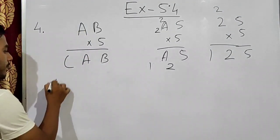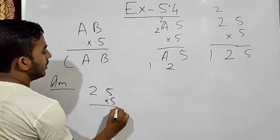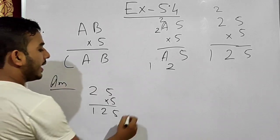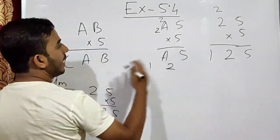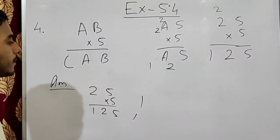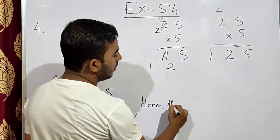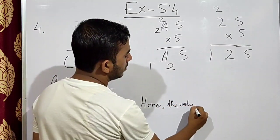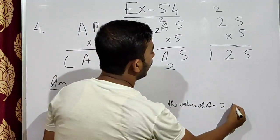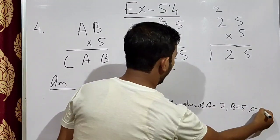So we write the answer: 25 multiplied by 5 equals 125. Hence, value of A equals 2, value of B equals 5, and C equals 1.